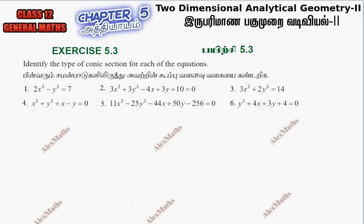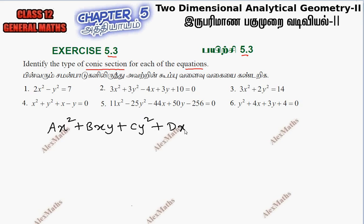Hi students, this is Alex here. Identify the type of conic section for each of the equations. This is a general equation: AX² plus BXY plus CY² plus DX plus EY plus F equals 0.